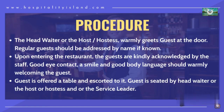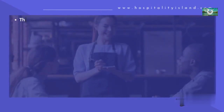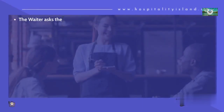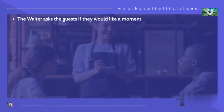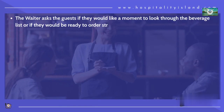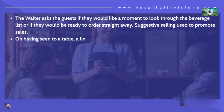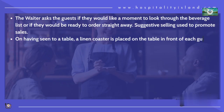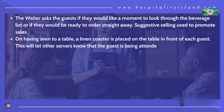Step 4: The waiter or server asks the guests if they would like a moment to look through the beverage list or if they would be ready to order straight away. Suggestive selling is used to promote sales. Step 5: Upon being seated at a table, a linen coaster is placed on the table in front of each guest. This will let other servers know that the guest is being attended to.